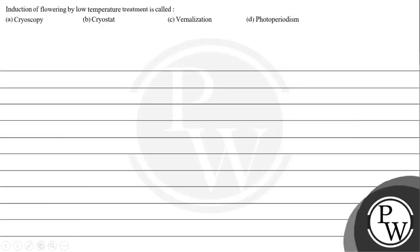Hello guys, let's read the question. Here is a question: Induction of flowering by low temperature treatment is called as — we are asked what this flowering induction by low temperature is called. We have 4 options: first is cryoscopy, second is cryostat, third option is vernalization, and fourth option is photoperiodism.